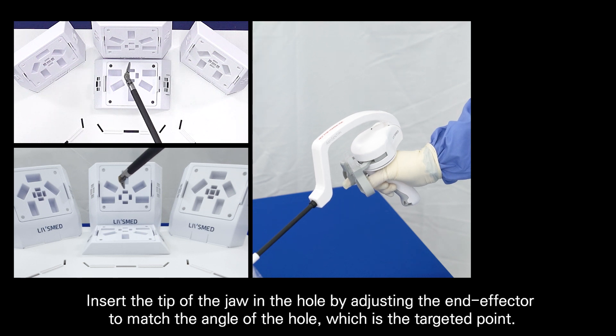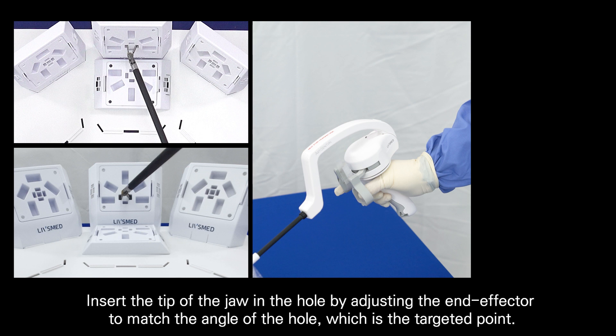Insert the tip of the jaw in the hole by adjusting the end effector to match the angle of the hole, which is the targeted point.